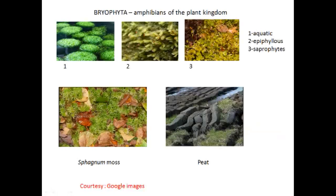Bryophytes thrive in a wide variety of habitats in a range of elevations, temperature and moisture. They are commonly called as amphibians of the plant kingdom because they are terrestrial plants but require water to complete their life cycle at the time of sexual reproduction. You can see a bryophyte growing in an extreme condition, right from the shady and damp environment to extremes and diverse habitats such as Arctic and desert regions.